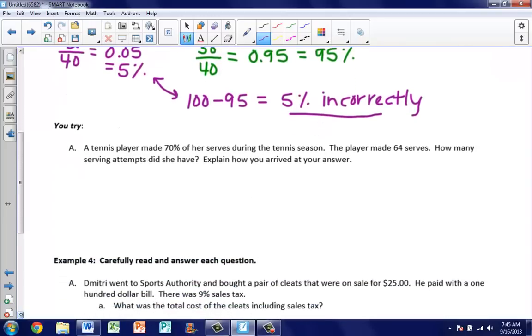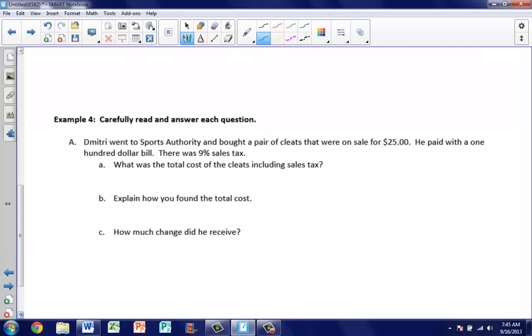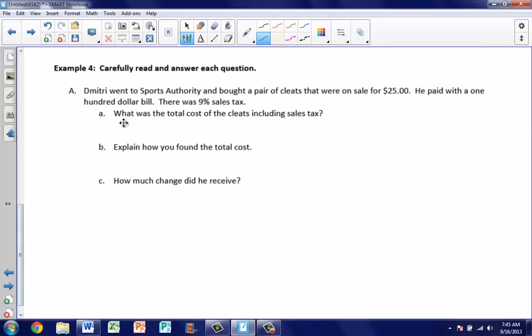If we take a look at our next example, we got a lot to answer here. First thing that we have is, for example four, Dimitri went to Sports Authority. What we have is that he bought a pair of cleats that were on sale for $25. He paid with a $100 bill and there was 9% sales tax. So you have to answer three questions. What was the total cost of the cleats, including sales tax? Explain how you found the total cost. And lastly, how much change did he receive if he's paying with that $100 bill?